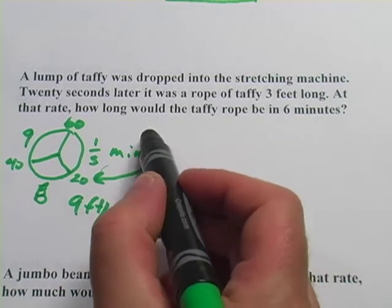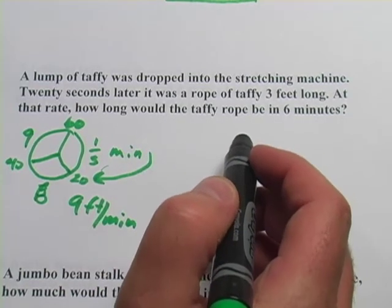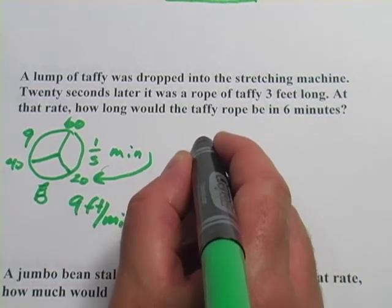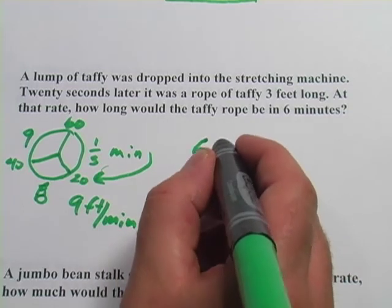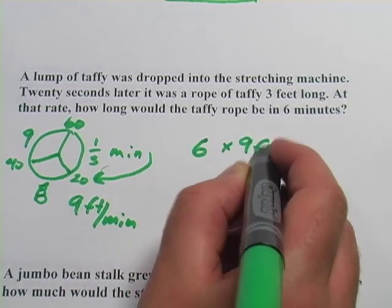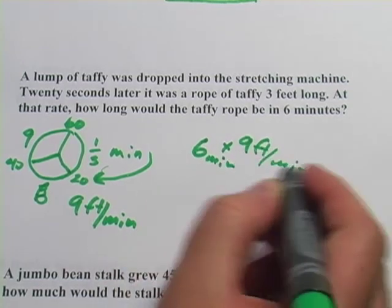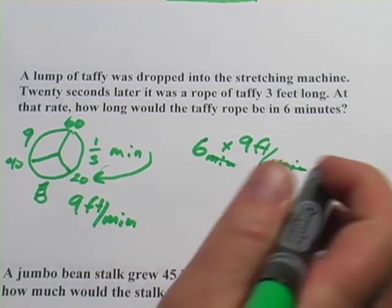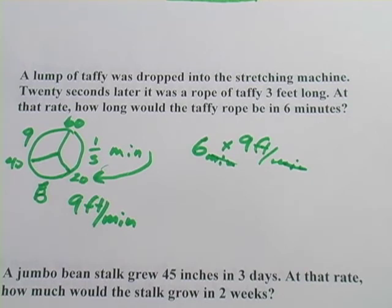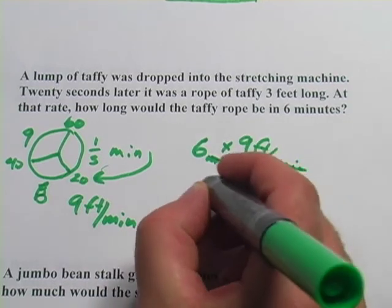Now it says, at that rate, how long would the taffy rope be in six minutes? So I would just take six minutes times the nine feet per minute. And the minutes are going to actually cancel out as units, and you'd get feet.